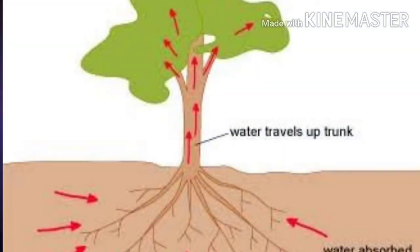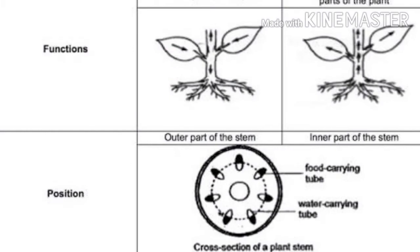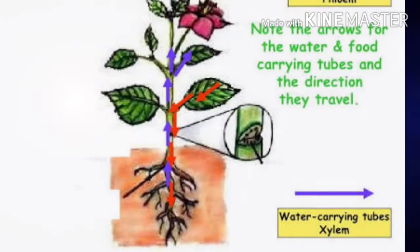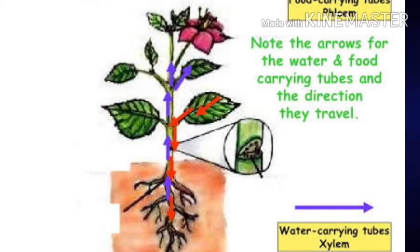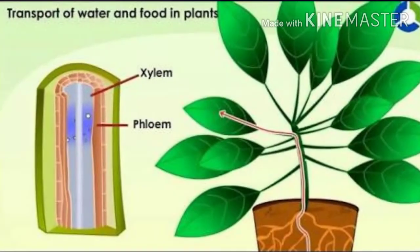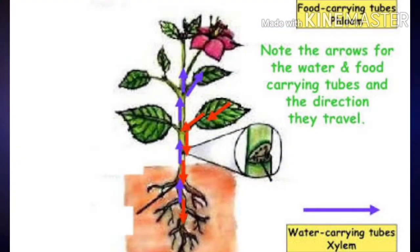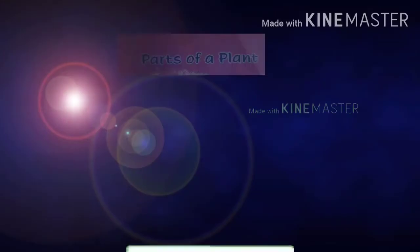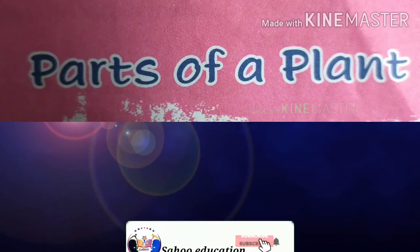Second: The Stem carries water and nutrients from the roots to the leaves. The Stem also carries the food made by the leaves to all parts of the plant.